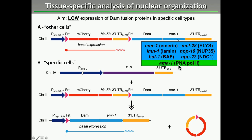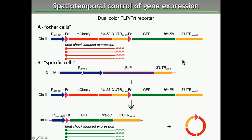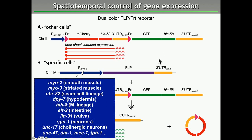To visualize how the system works, instead of the DAM fusion we put in a GFP-histone and combine it with a heat shock so we can see what is happening. We are doing this because we want to perform DAM-ID in specific tissues, but we also think this toolkit can be useful for many other approaches. We have therefore extended our list of flipase-driven promoters extensively so that all other tissues can also be addressed.